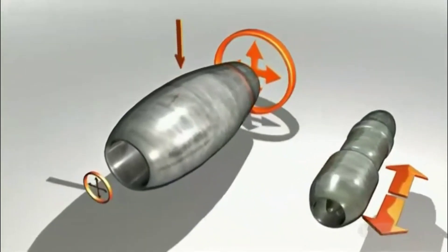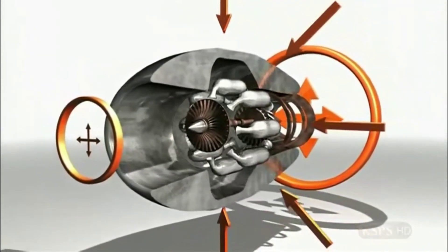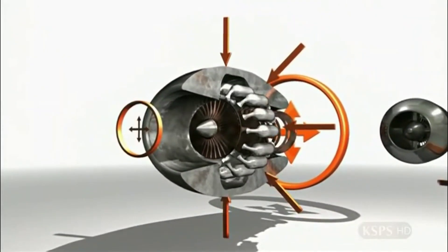In the centrifugal engine, the only way to force more air into the combustion chambers was to increase the size of the disc, making the engine fatter and less aerodynamic.